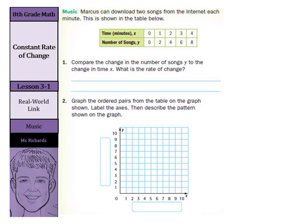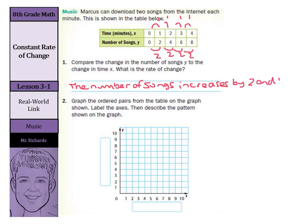Well, our number of songs Y are increasing by two here, whereas our number of minutes is increasing by one. So we could say that the number of songs increases by two and the time increases by one. If I'm looking to make this a rate here, I could say two songs per minute.